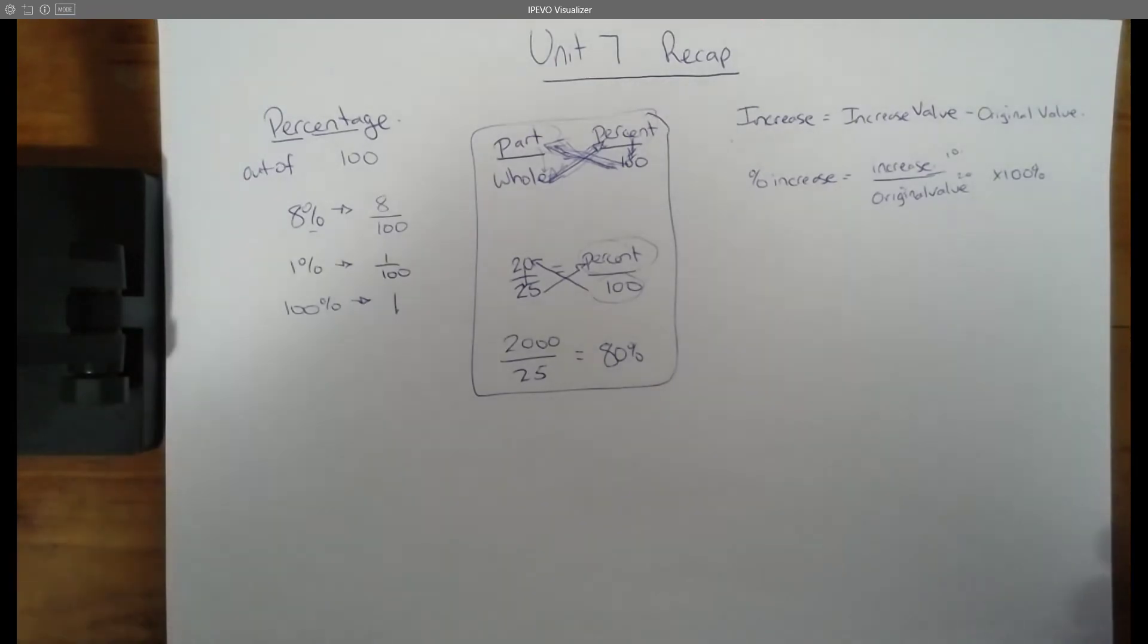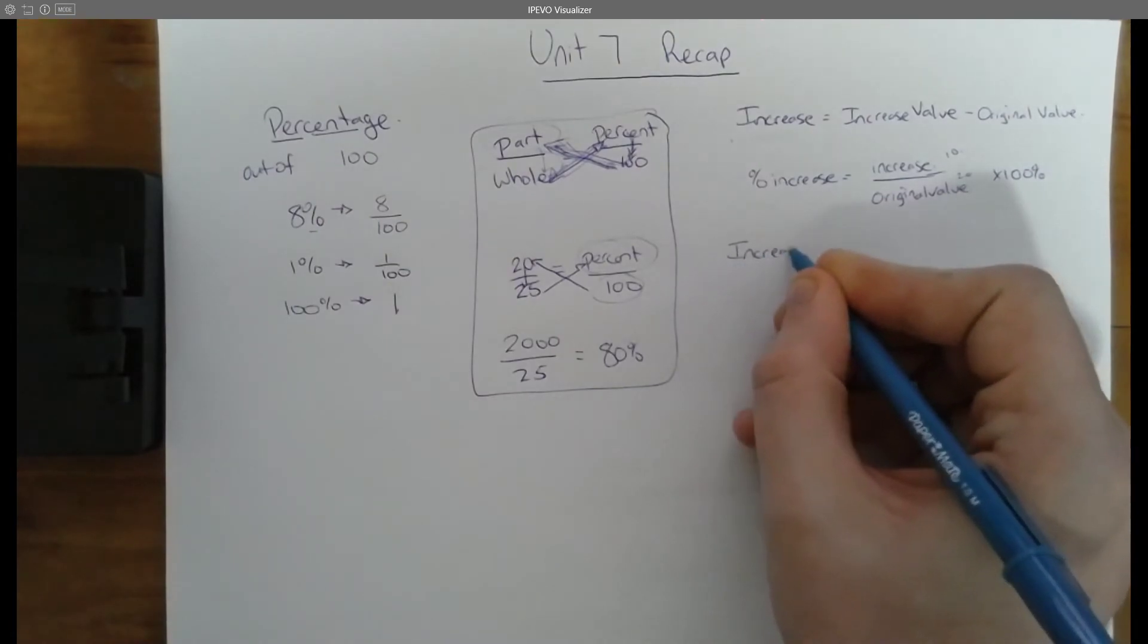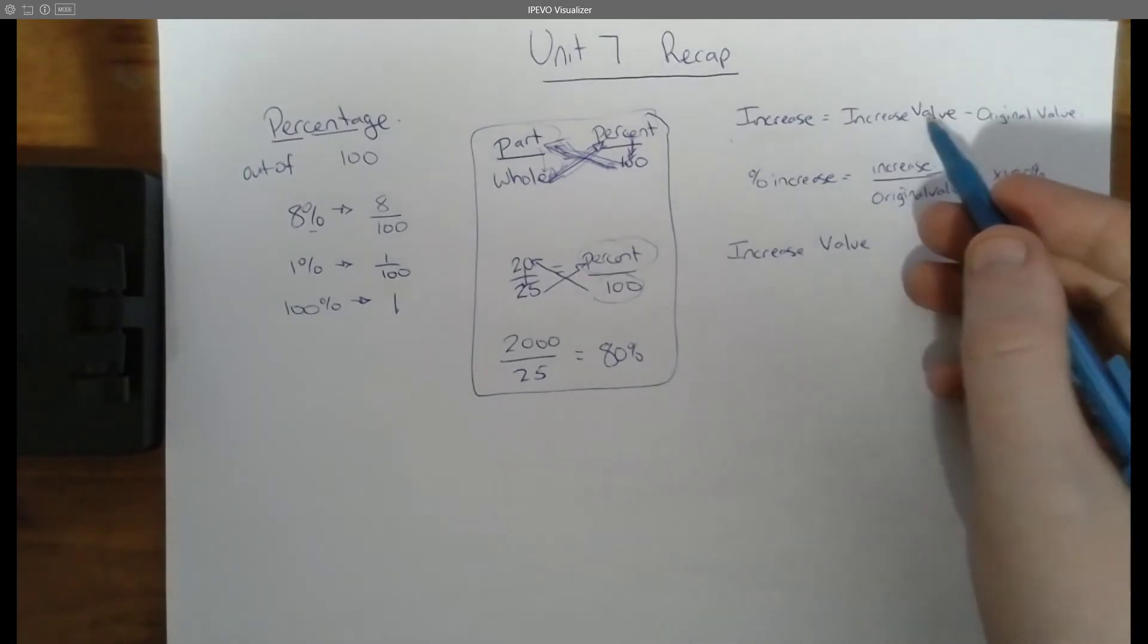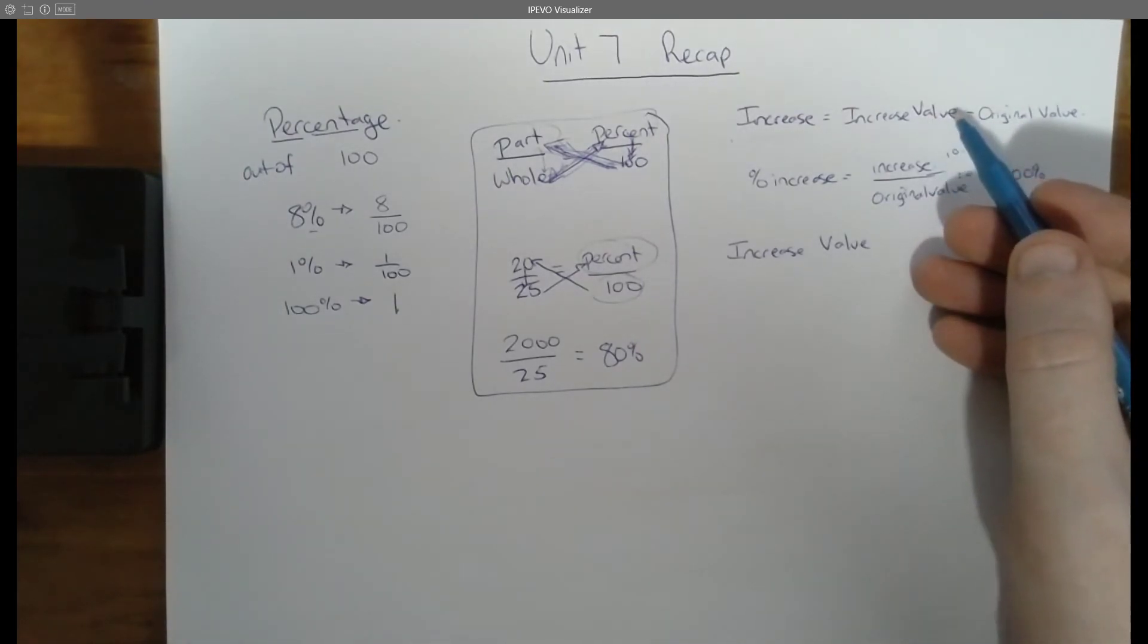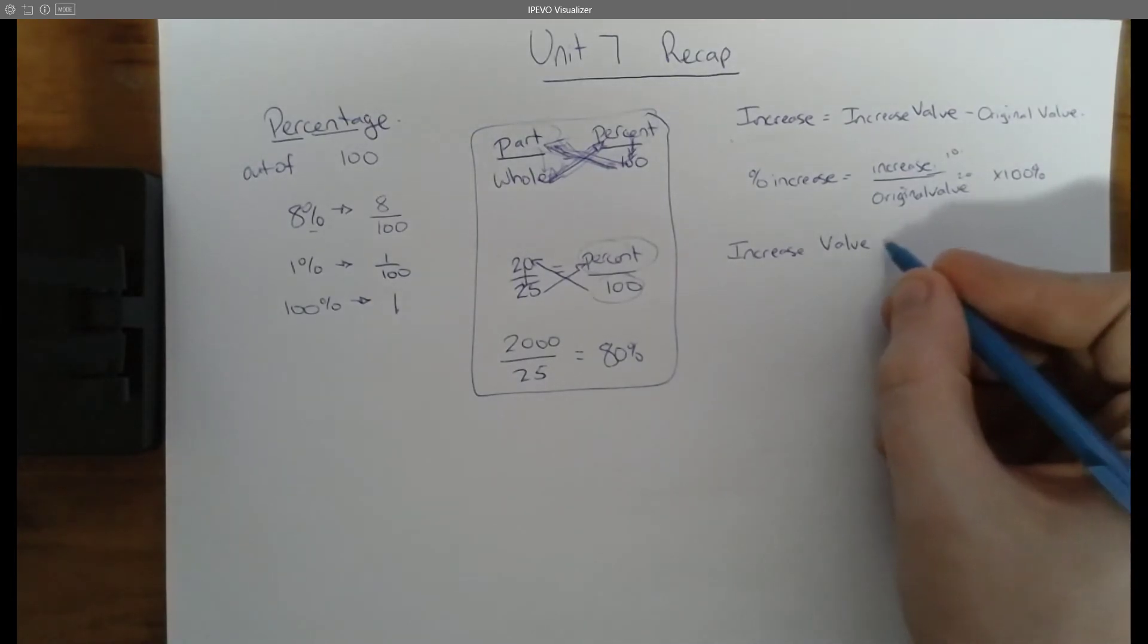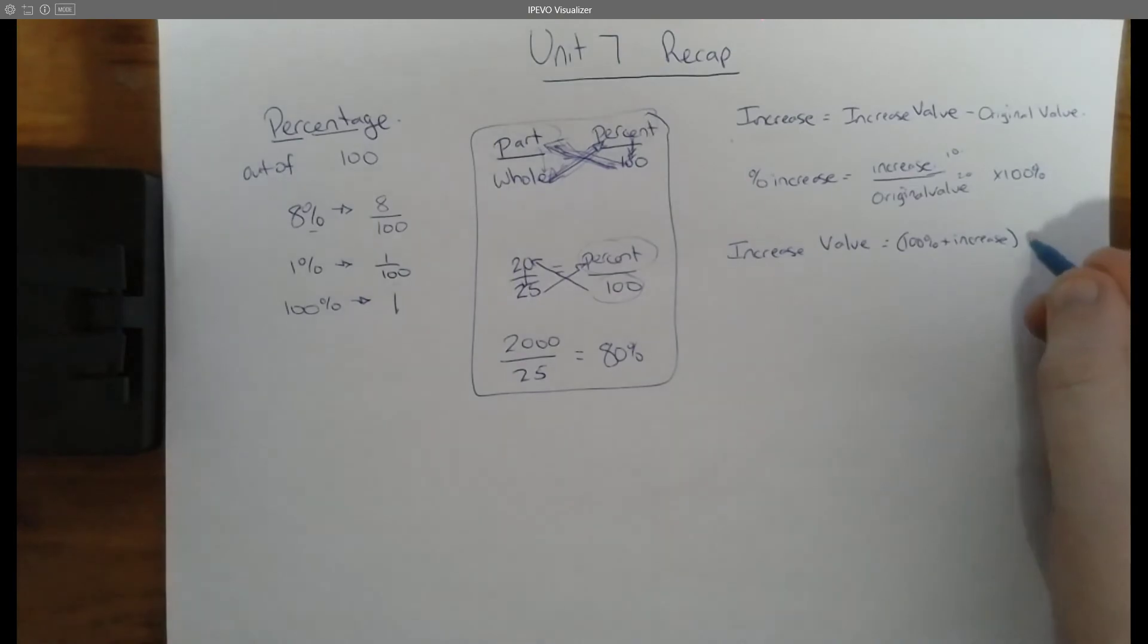We also talked about decrease. The nice thing about decrease is that we solve it almost exactly the same way. The only difference is here, when we have increase value, another term that we can figure out. We had it here. When we have it, when we know it, it's great. But when we don't, this is another way that we can solve it.